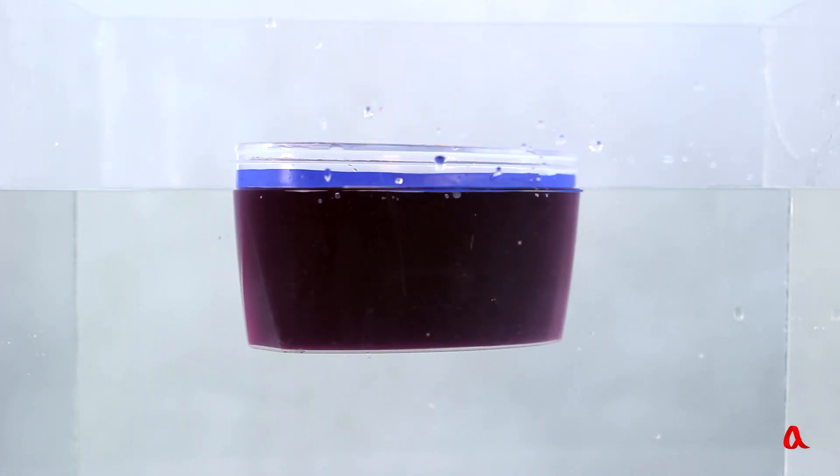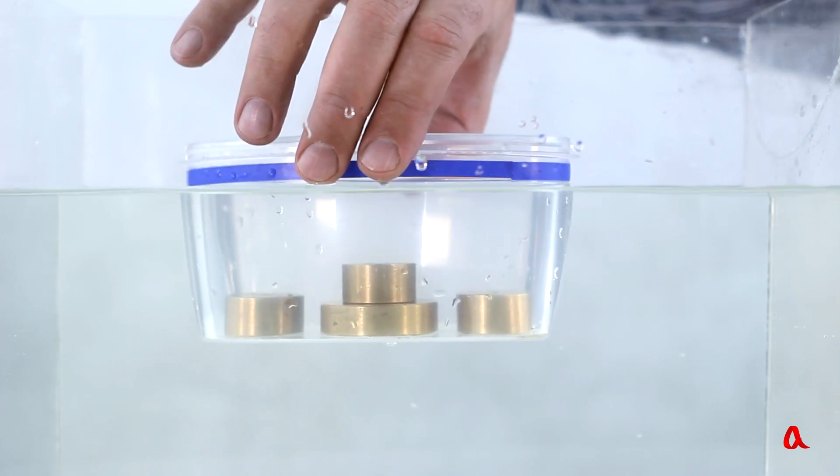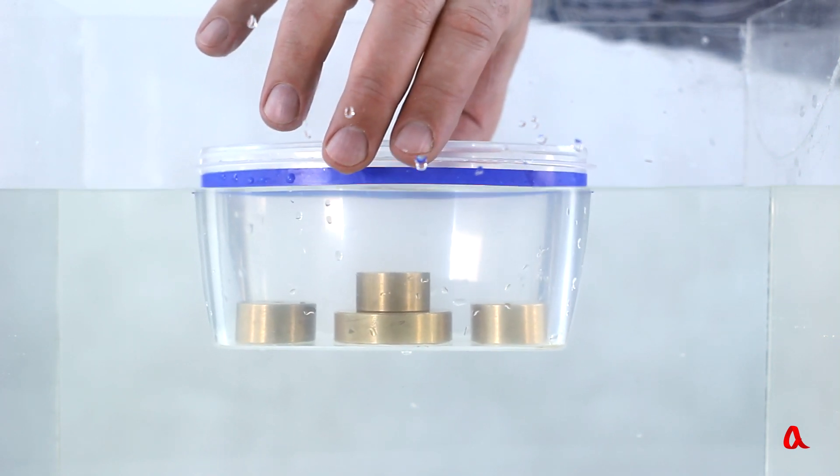But is there a difference what to pour into the container? Let us put in 500 grams of brass load weights. The container submerges to the level of the blue line again.